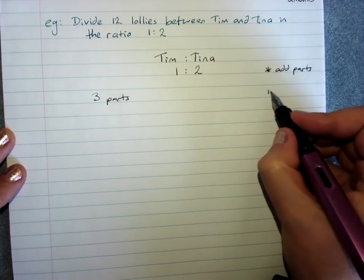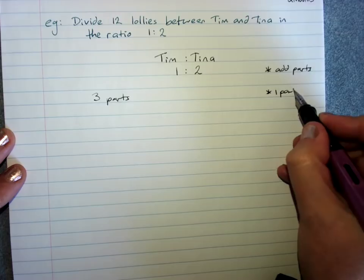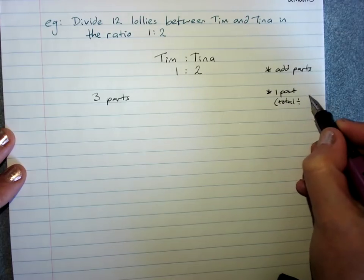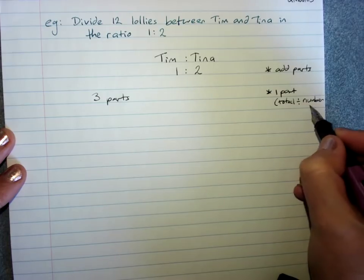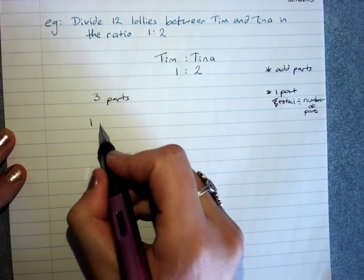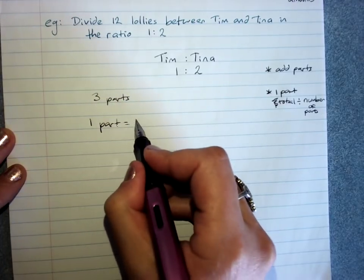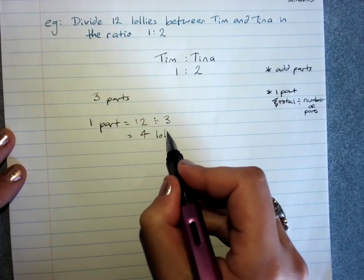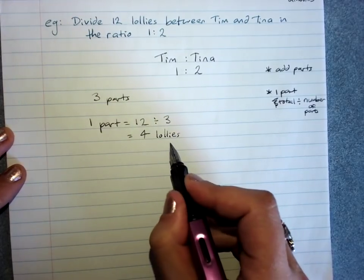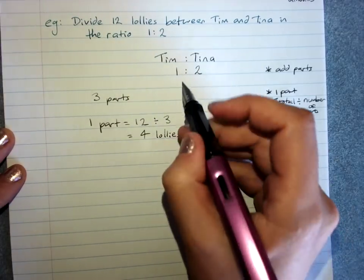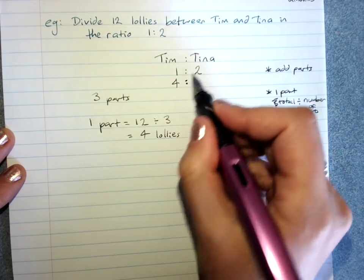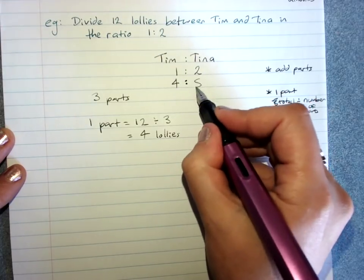So we find the amount that is one part, which is the total divided by the number of parts. So one part is twelve lollies divided by three parts - four lollies is one part. Tim gets one part, so Tim gets four lollies. Tina gets two parts, so Tina gets two lots of four - eight lollies.